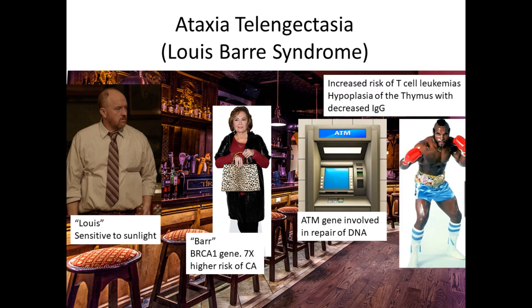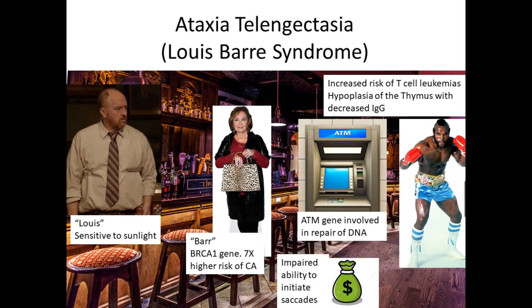Ataxia telangiectasia patients have decreased IgG, making them very prone to fatal respiratory bacterial infections and neoplasms like leukemia and lymphoma. These patients are very sensitive to light due to UV damage, and the BRCA1 gene is also influenced by the ATM gene, so even female heterozygous carriers can have an increased risk of breast cancer.